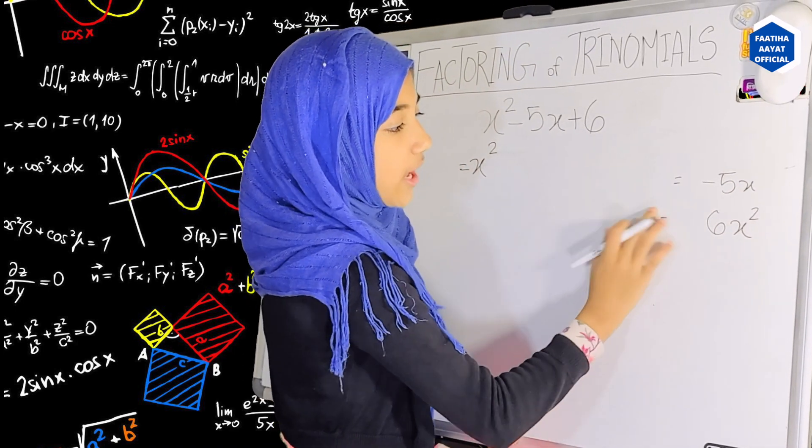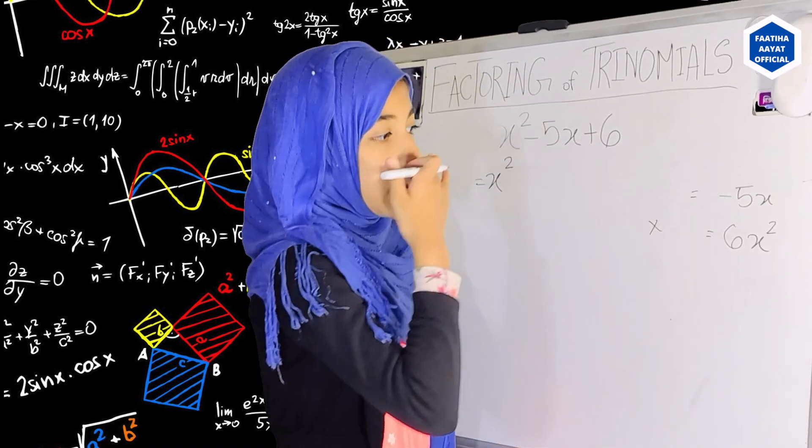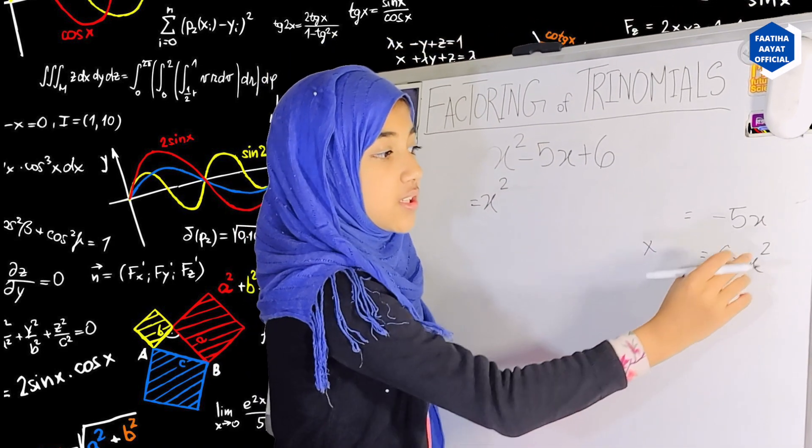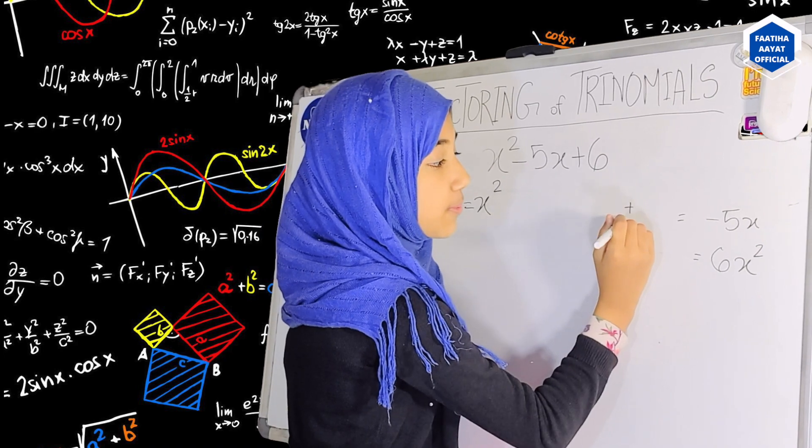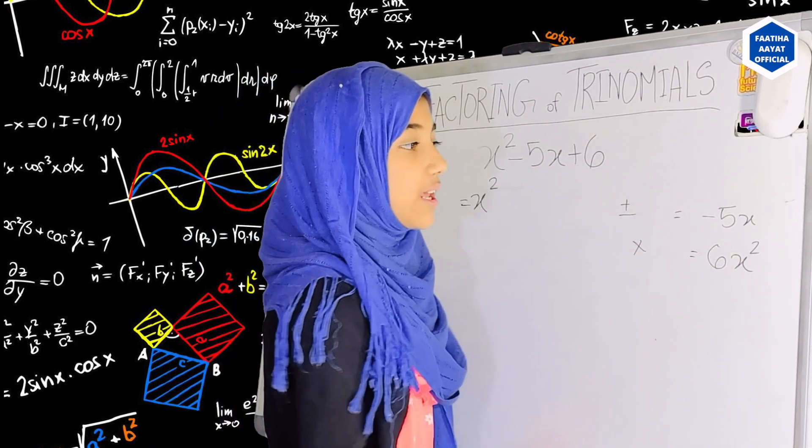Then we are going to leave minus 5x as it is. Then what we have to do is we have to multiply two numbers which will get us to the product of 6x squared, and we either have to add or subtract two numbers that will get us to minus 5x.